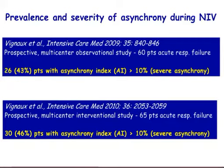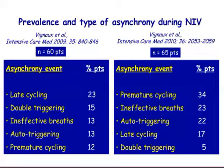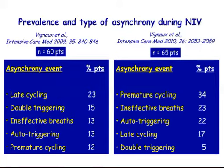Looking at the type of asynchrony found in these studies, the picture is slightly different. Given that patient populations were mostly comparable, it was surprising that the first study showed late cycling was an issue whereas in the second it was premature cycling. The studies were not designed to compare the reasons why asynchrony might differ — one documented the prevalence of asynchrony and the other was an interventional study testing the clinical benefits of NIV modes on ventilators. So there is no clear explanation for these differences.